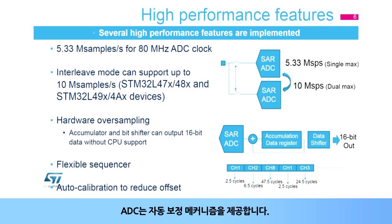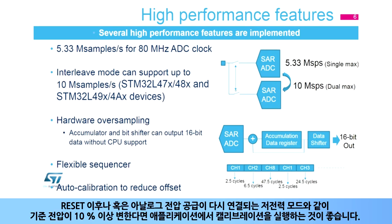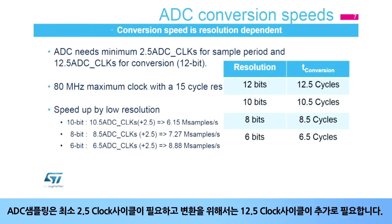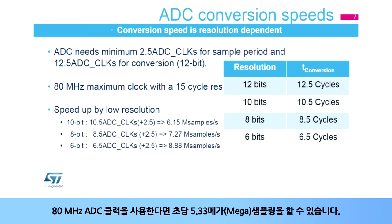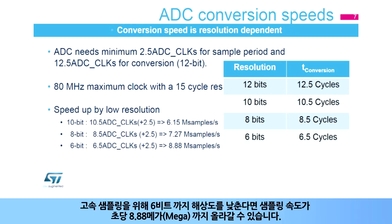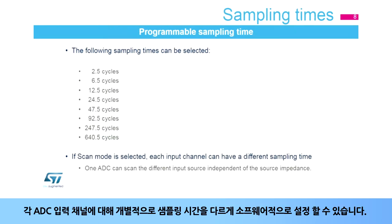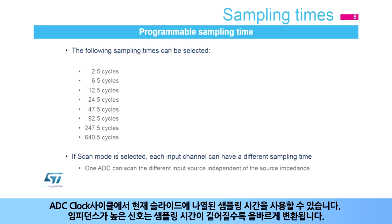The ADC offers an auto-calibration mechanism. It is recommended to run the calibration if the reference voltage changes more than 10%, which includes emerging from reset or from a low power state where the analog voltage supply has been removed and reinstated. The ADC needs a minimum of 2.5 clock cycles for sampling and 12.5 clock cycles for conversion. With an 80 MHz ADC clock, it can achieve 5.33 mega samples per second. For high-speed sampling, it is possible to reduce the resolution down to 6 bits, then the sampling speed can go up to 8.88 mega samples per second. The sampling time can be programmed individually for each input channel.